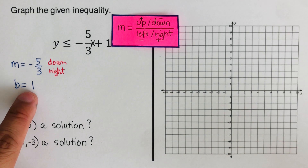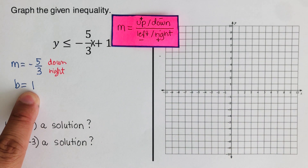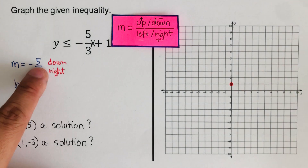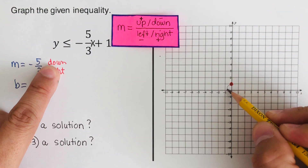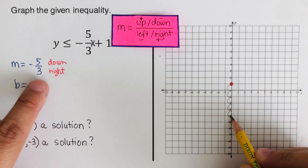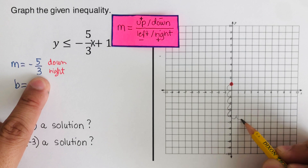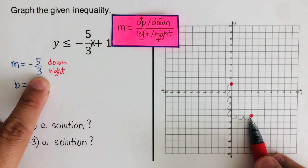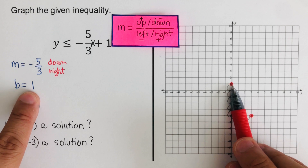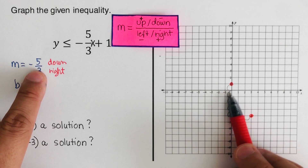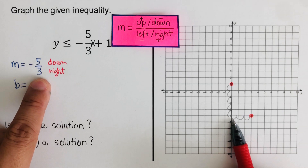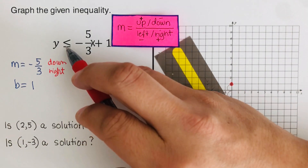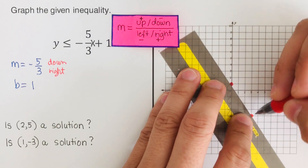To sketch the graph, I plot the y-intercept at 1. From there I go down 5 — that's 1, 2, 3, 4, 5 — then right 3 — 1, 2, 3 — to find the second point. I connect these two points to sketch the line.